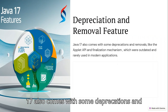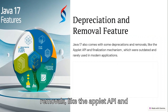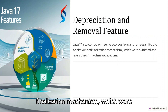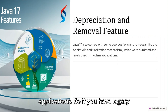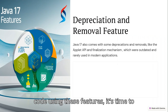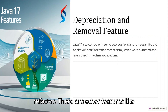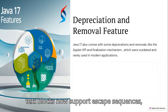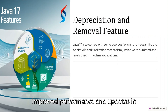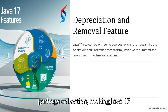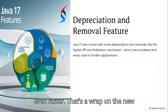Java 17 also comes with some deprecations and removals, like the Applet API and finalization mechanism, which were outdated and rarely used in modern applications. If you have legacy code using these features, it's time to refactor. There are other features like text blocks now supporting escape sequences, improved performance, and updates in garbage collection, making Java 17 even faster.